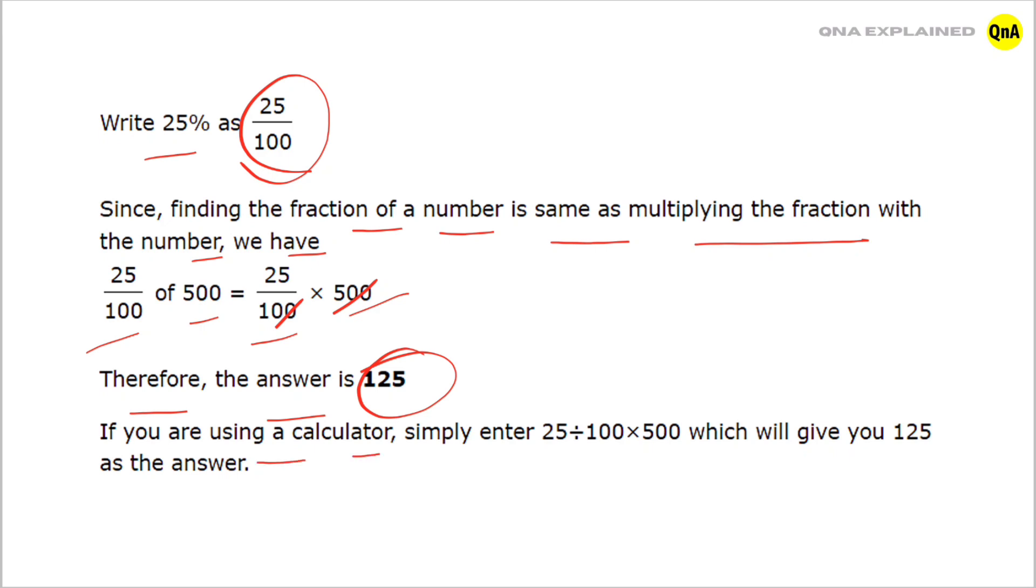If you are using a calculator, simply enter 25 divided by 100 into 500 which will give you 125 as the answer.